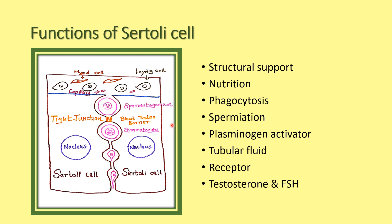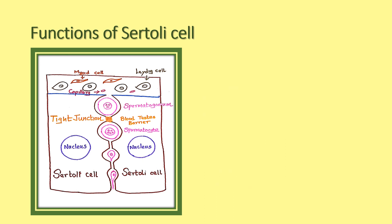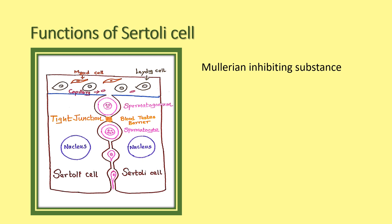During intrauterine life, at the eighth week, Sertoli cells produce Müllerian inhibiting substance (MIS). This inhibits the Müllerian ducts, allowing the male reproductive organs to develop. So Müllerian inhibiting substance is important for the development of the male reproductive organs.